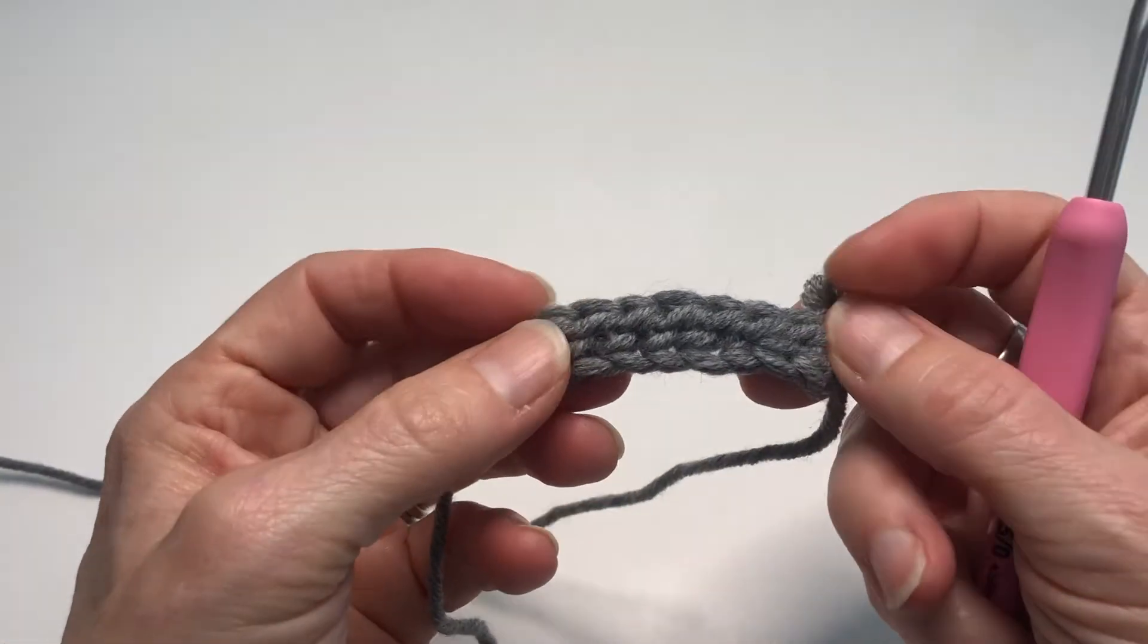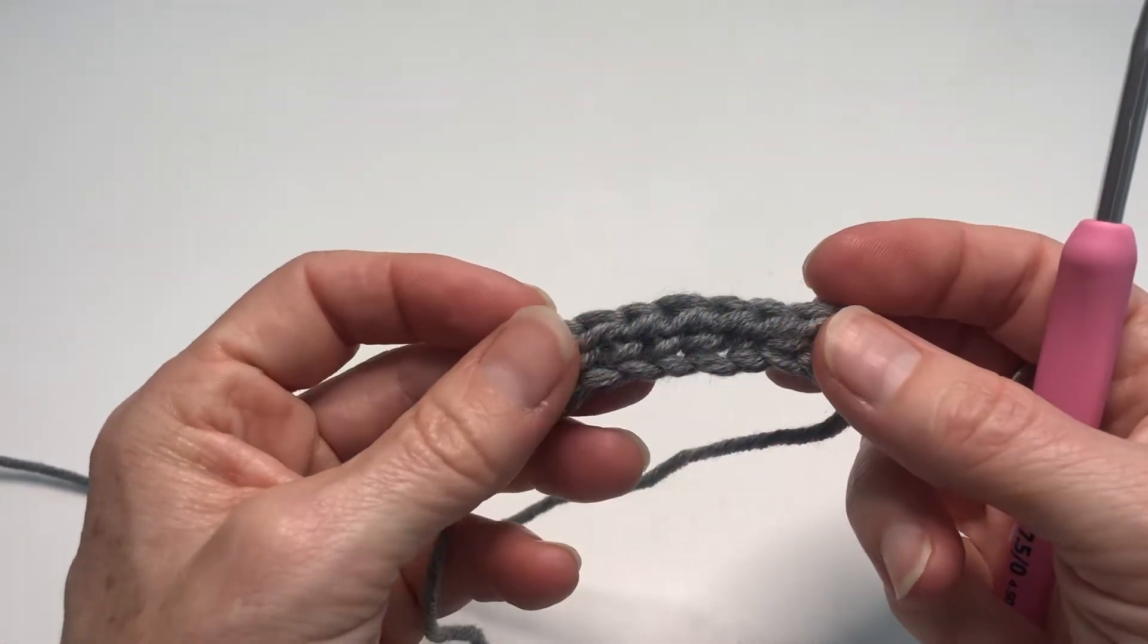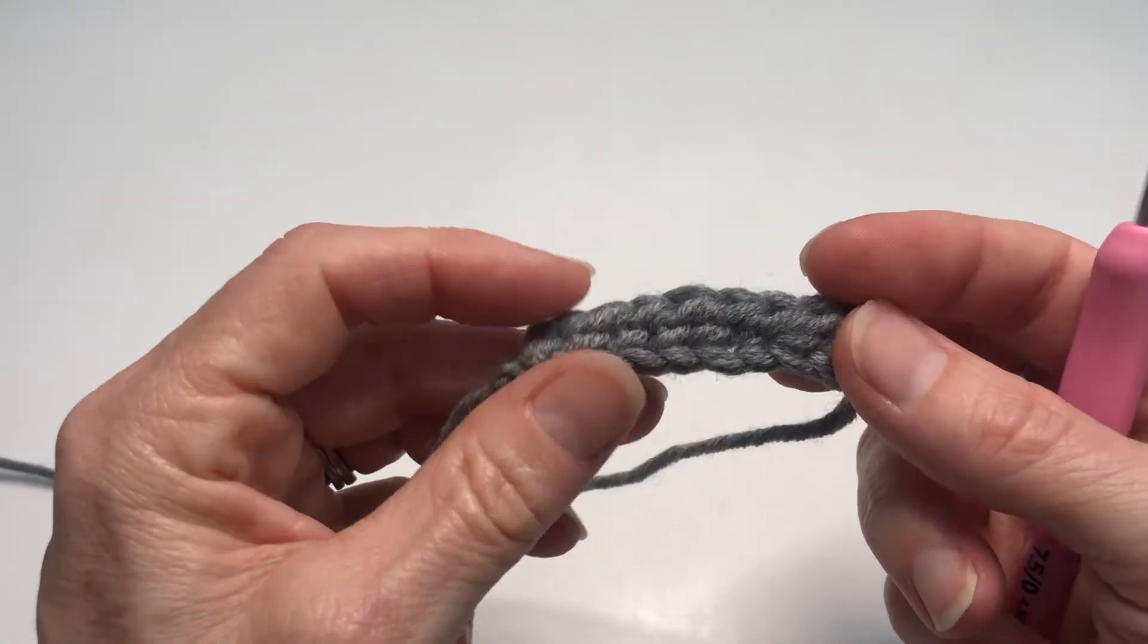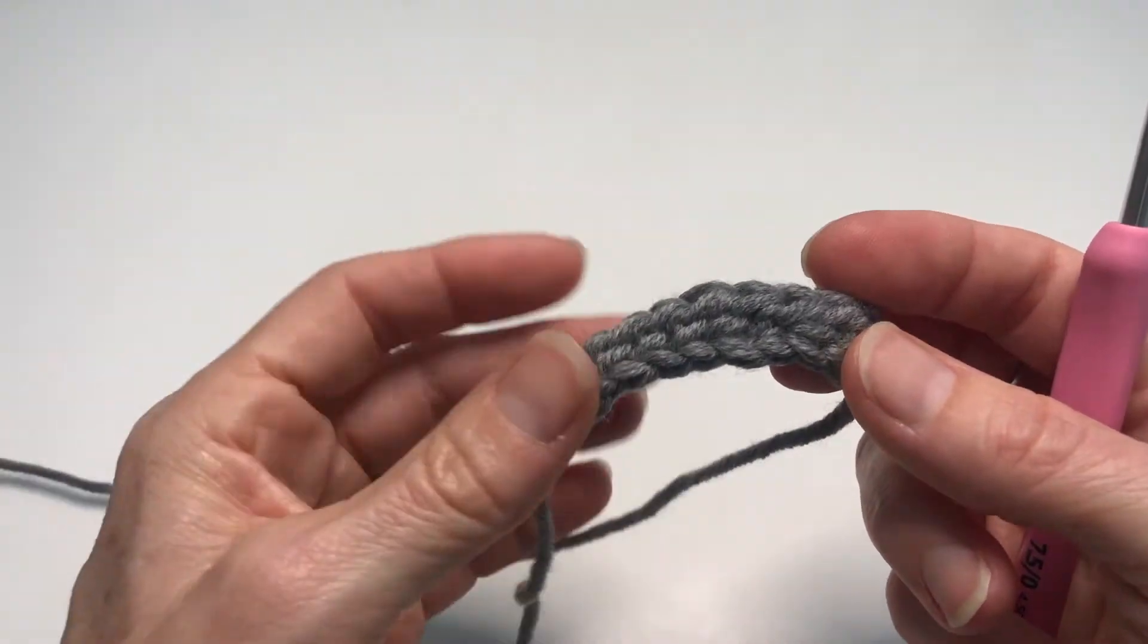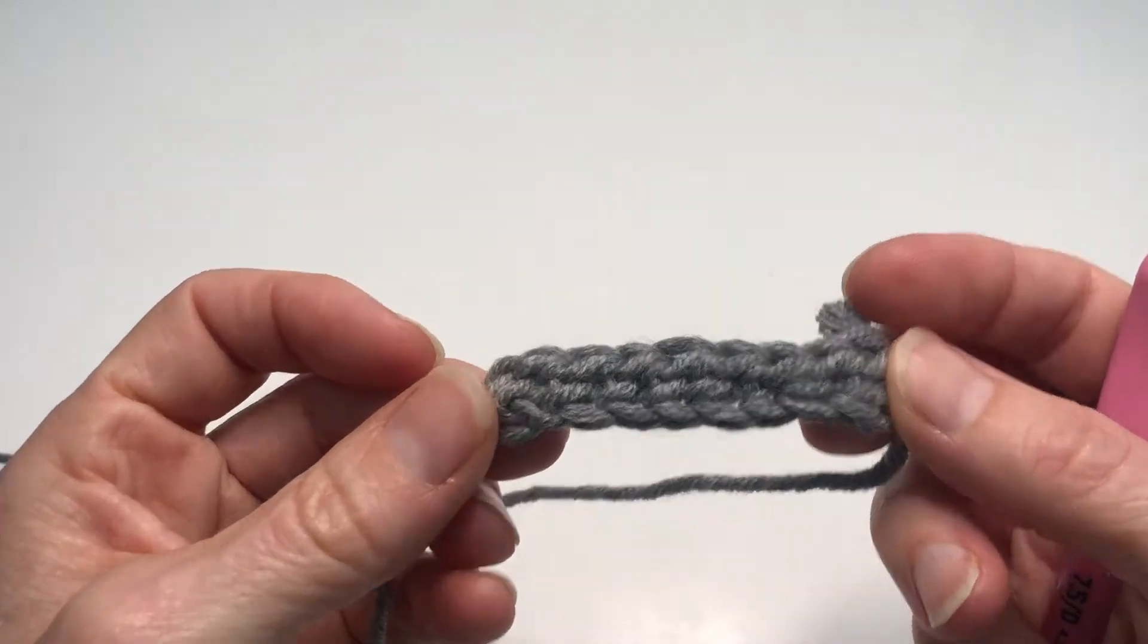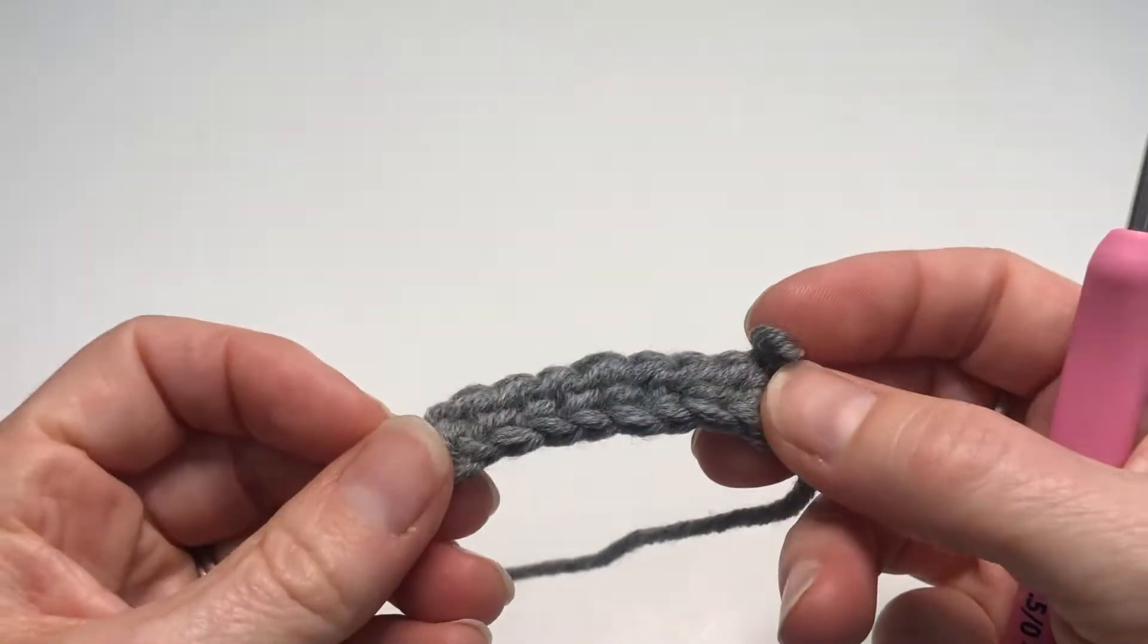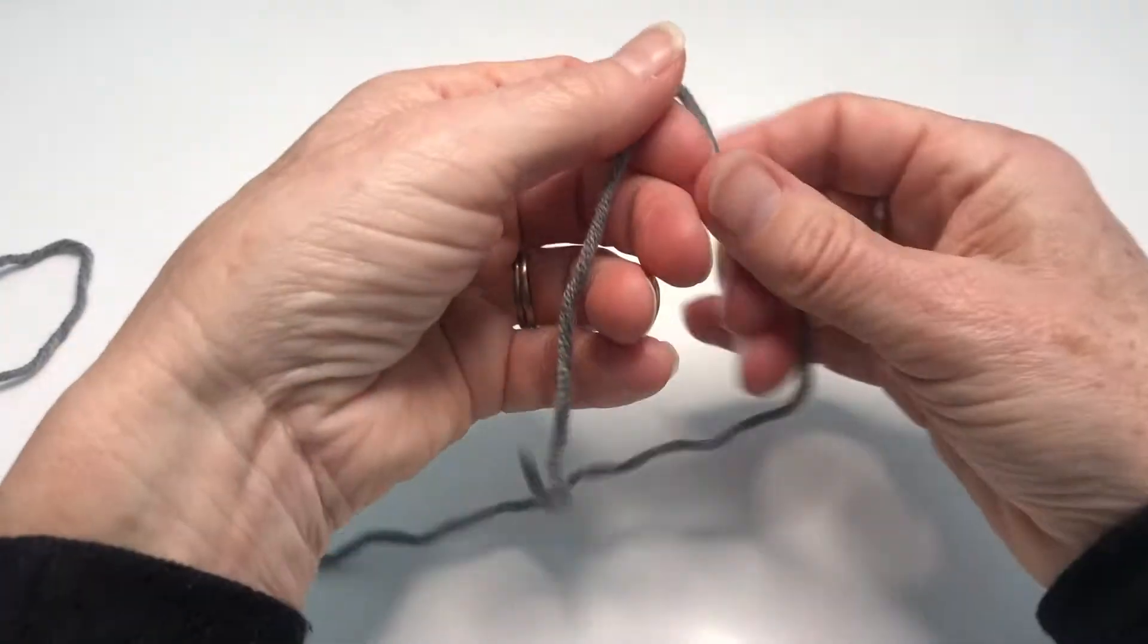And you can see that the foundation rows combine the chain row with the stitch row, in this case the half treble crochet. So this is what it's going to look like - nice springy consistency. You're going to start with